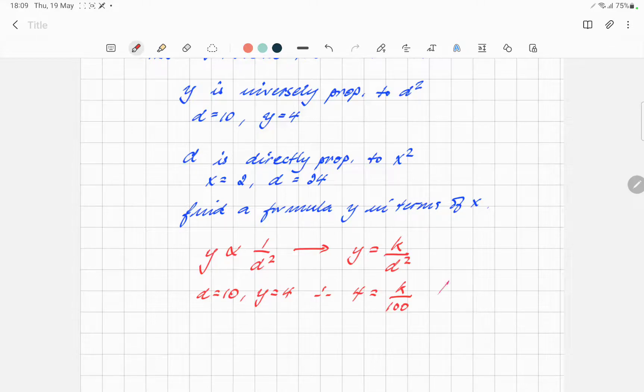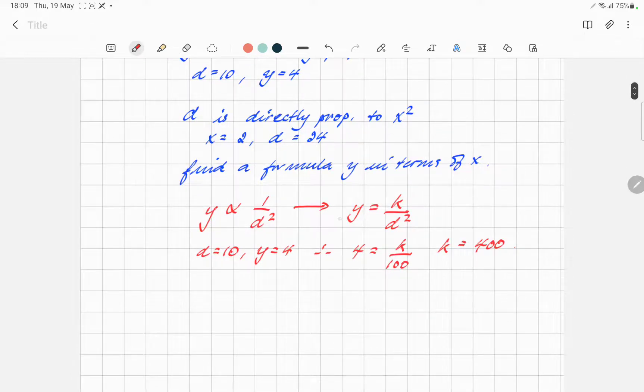So, this k is 400. Make sense? So, the formula for y in terms of d is y equals 400 over d squared. That's the first part.